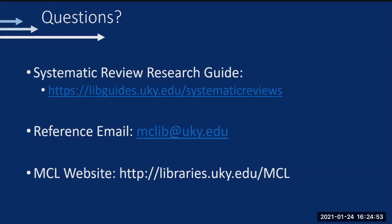The systematic review research guide is always available for you. You can email us at NCLib at UKY.edu. You can use the literature search request on the medical library's homepage if you just need a literature search done. There's also the consult form on the systematic review guide if you think you might want to undertake a systematic or other type of review. Thank you for coming today, and I'd be happy to answer any questions you might have.